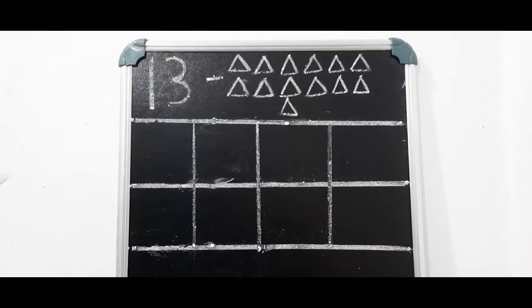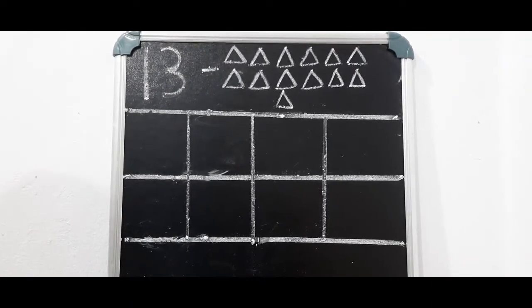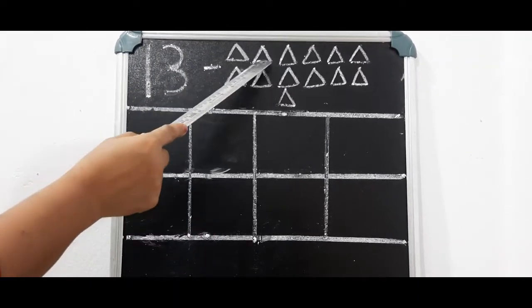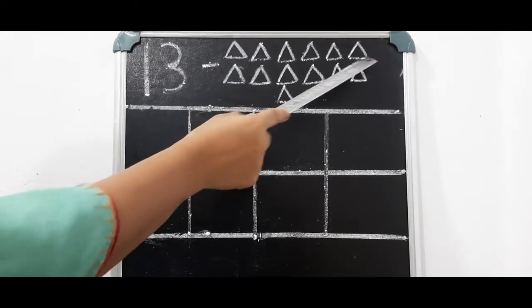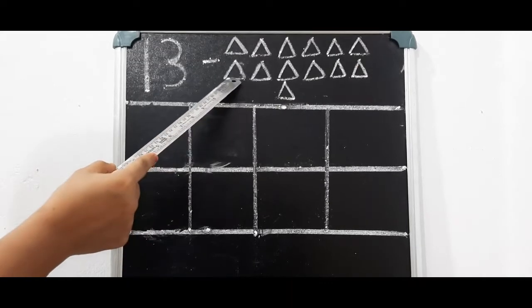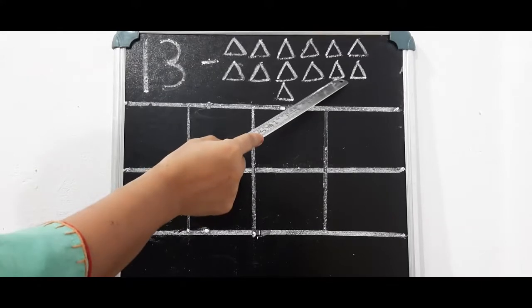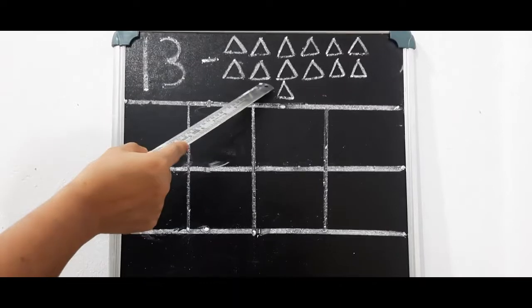Now let's learn how to write number 13. Children, this is the number 13: 1, 3 — 13. Now let's count these triangles. 1, 2, 3, 4, 5, 6, 7, 8, 9, 10, 11, 12, 13. 13 triangles.